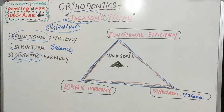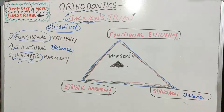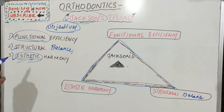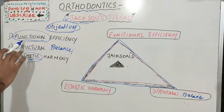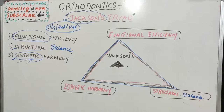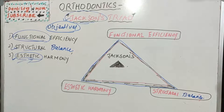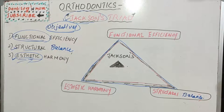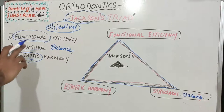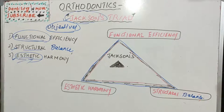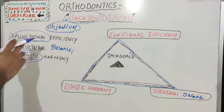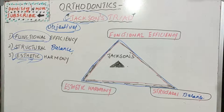From an orthodontist's point of view, they should be looking not just at the aesthetic problem but also at structural balance and functional efficiency. The main objectives of orthodontic treatment should be based on three factors: functional efficiency, structural balance, and aesthetic harmony. When these three things come together, there will be a perfect result.